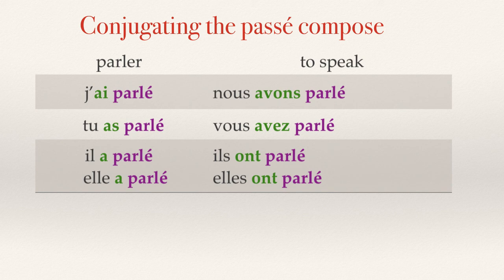What changed was our form of avoir, which changed with the subject. So we have: j'ai parlé, tu as parlé, il a parlé, elle a parlé, nous avons parlé, vous avez parlé, ils ont parlé, elles ont parlé.